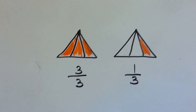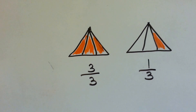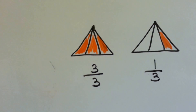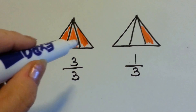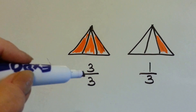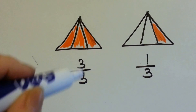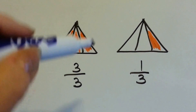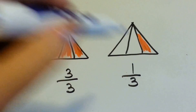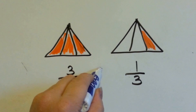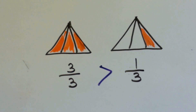Let's look at this: three-thirds or one-third? Three-thirds is equal to the whole thing. And one-third is just one little part of the three. Three-thirds is much bigger than one-third.